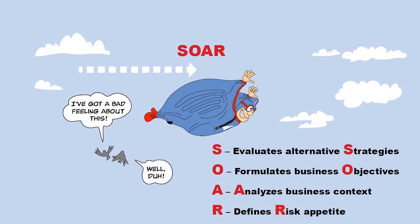The second component in GoPro is objective setting — strategy and objective setting. That's supported by four principles. What you should be visualizing is that those birds fly off with a destination in mind. So these doves are going to soar.